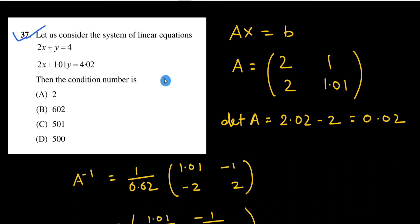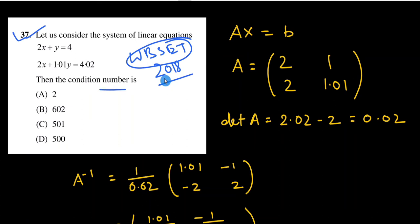Now we have another question taken from the WB SET 2018 question paper. The question says: consider the system of linear equations 2x + y = 4 and 2x + 1.01y = 4.02. Then the condition number is — with four options given. The coefficient matrix A = [2, 1; 2, 1.01].